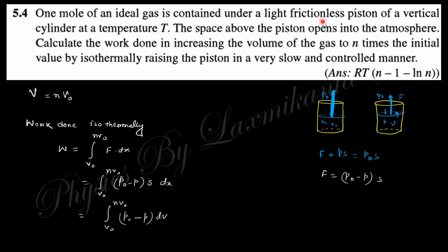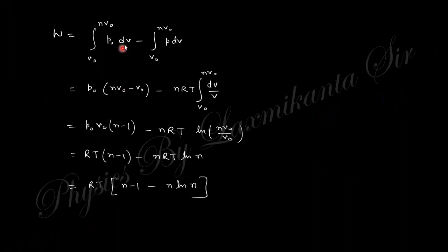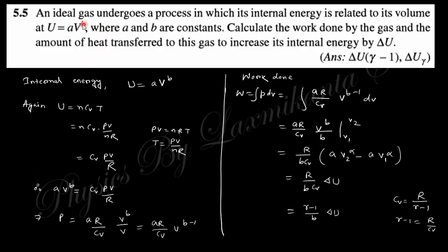Question 4: One mole of ideal gas is contained under a light frictionless piston in a vertical cylinder at temperature T, with the space above the piston open to the atmosphere. Calculate the work done to increase the volume two times. This is an isobaric process. The work done equals force times displacement; the effective pressure is p_atmosphere − p, and with area × distance = volume, you get W = ∫p dV. Substituting p = nRT/V and integrating gives the final answer with a logarithmic term ln(n).